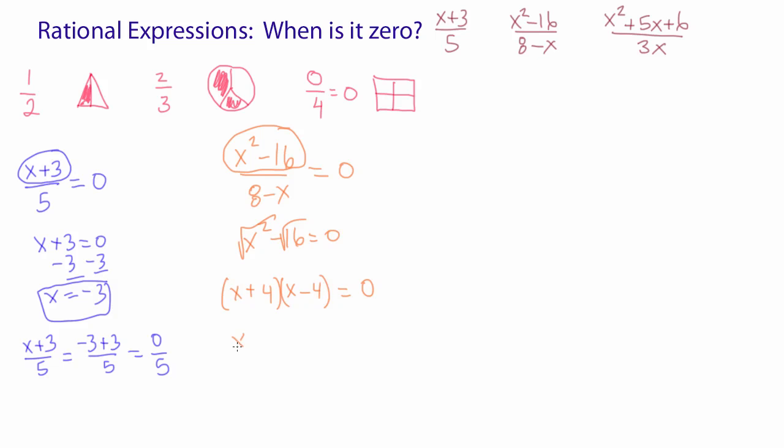Then I have to set each factor to zero with the zero product rule. And then I solve for each x value: x equals negative four and x equals four. So these are my two answers.